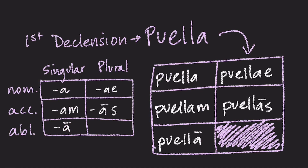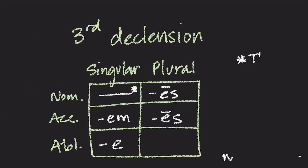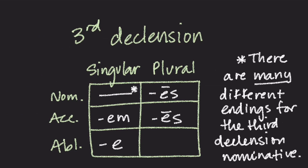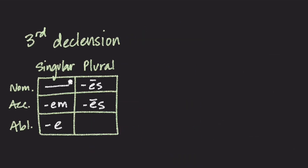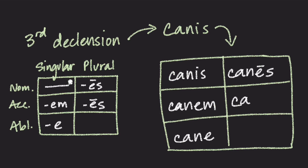If we're looking at words like Kanes, which are third declension words, they have these endings. We notice a blank in the nominative singular because there are many different endings for the third declension nominative. However, the accusative singular will always end in E-N, and the ablative singular will always end in a short E. The nominative and accusative plural both end in long E-S. Words like Kanes will decline this way: Kanes, Kanem, Kane, Kanes, Kanes.